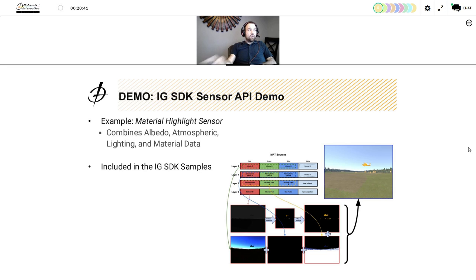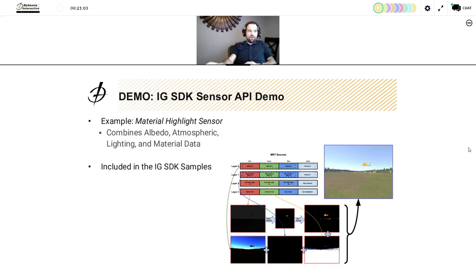Within the VBS IG SDK, we ship an example called the material highlight sensor, which combines various data types into a final output. In the lower right you can see a little helicopter which is highlighted — in this sensor we've decided to highlight all the metal things in the scene, showing how you can combine the various layers to do that in the sensor API.